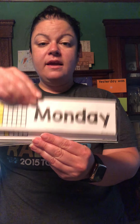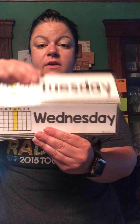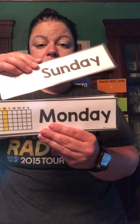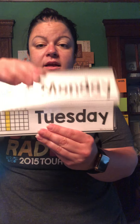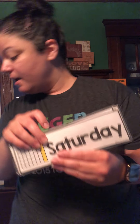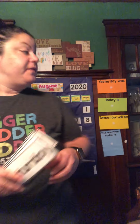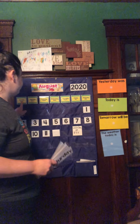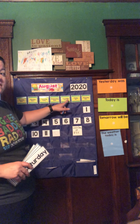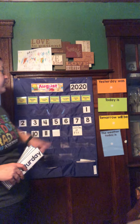Sunday, Monday, Tuesday, Wednesday, Thursday, Friday, Saturday. Sunday, Monday, Tuesday, Wednesday, Thursday, Friday, Saturday. There are seven days, there are seven days, there are seven days in a week.